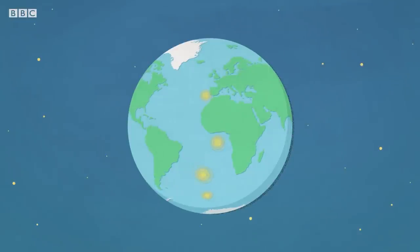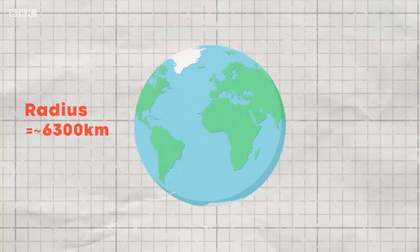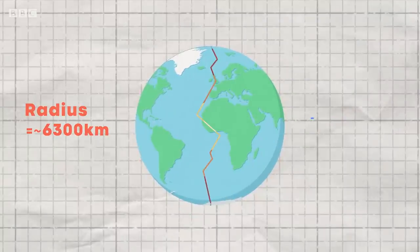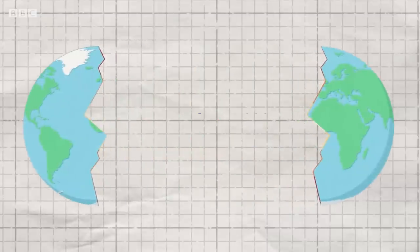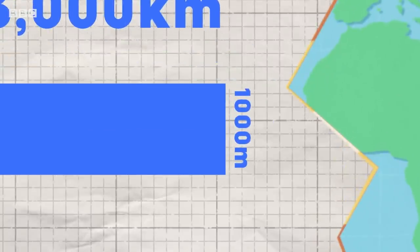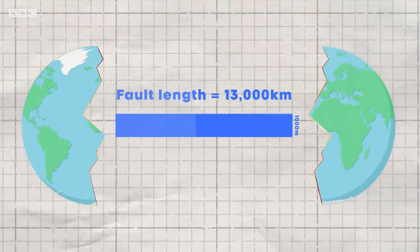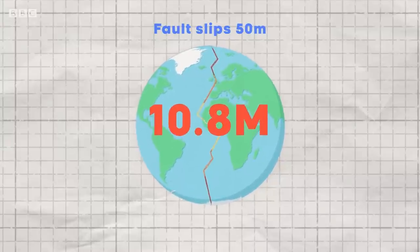So how big a quake would it take to split the planet in two? We know the radius of the Earth is 6,300 kilometres, so if we want to split the Earth fully into two, we're looking at a diameter of about 13,000 kilometres. If we take a fault length of about 13,000 kilometres, and assume a fault width of 1,000 metres, and say that fault moves 50 metres during that earthquake, that's going to be theoretically a magnitude 10.8 earthquake.